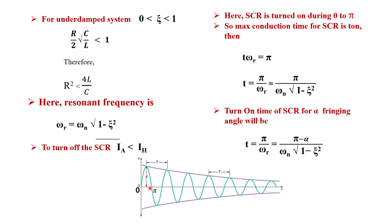The conduction time or turn-on time of the SCR is calculated as follows: since the SCR is on from 0 to π, we have ωᵣt = π, so t = π/ωᵣ. The resonant frequency is ωᵣ = ωₙ√(1 − ζ²), giving the maximum turn-on time as t = π / (ωₙ√(1 − ζ²)). If the SCR is fired at angle α, the turn-on time is t = (π − α) / ωᵣ.